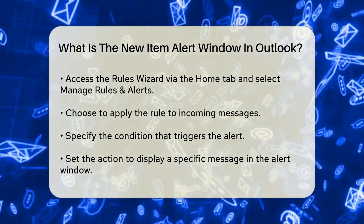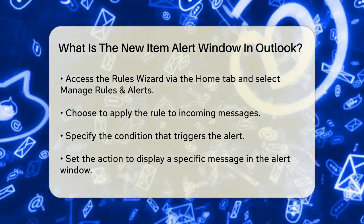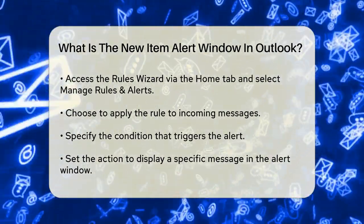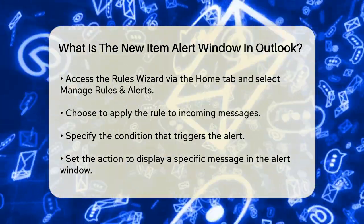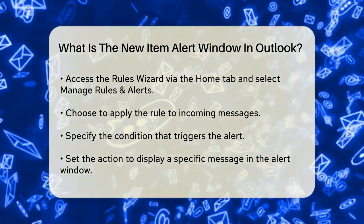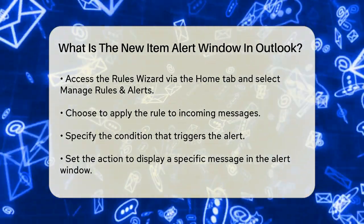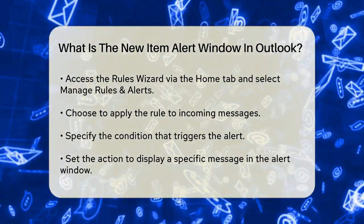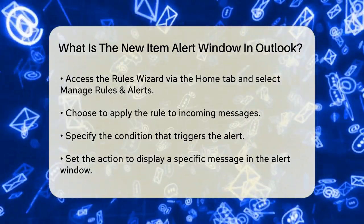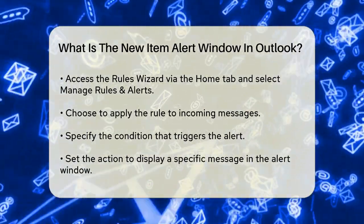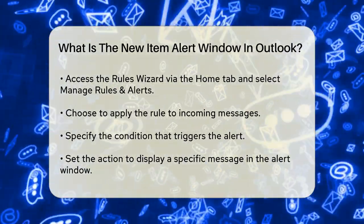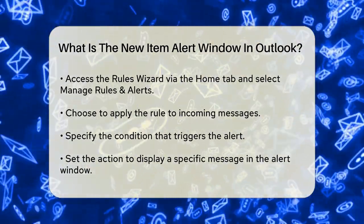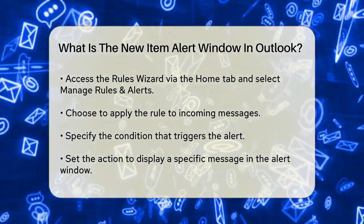Choose the option to apply the rule on messages you receive, and then select the condition that triggers the alert, such as emails from a specific person or public group. Once you've set the condition, you can specify what action Outlook should take when the rule is triggered. In this case, you would check the option to display a specific message in the New Item Alert window.